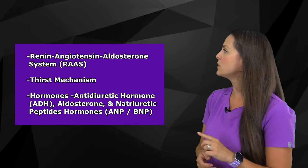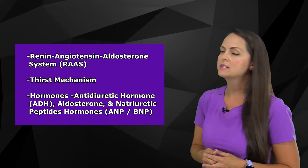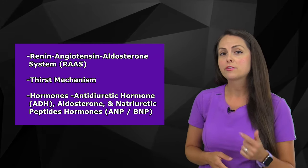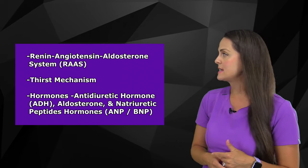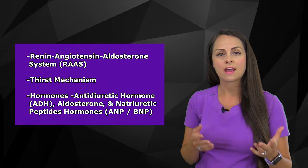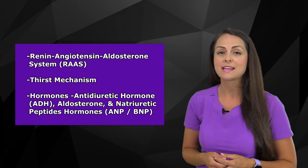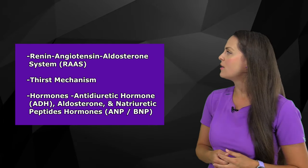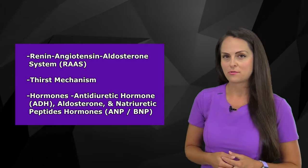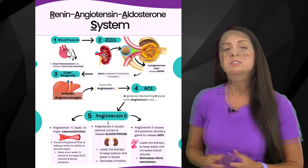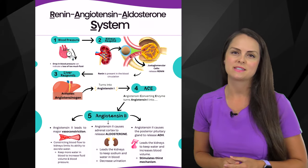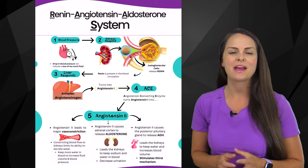In this lecture we're going to review the renin-angiotensin-aldosterone system, known as RAS. I'm also going to talk about the thirst mechanism and review the hormones known as antidiuretic hormone, which is ADH, aldosterone, and the natriuretic peptide hormones. So first let's review the renin-angiotensin-aldosterone system, also known as RAS.